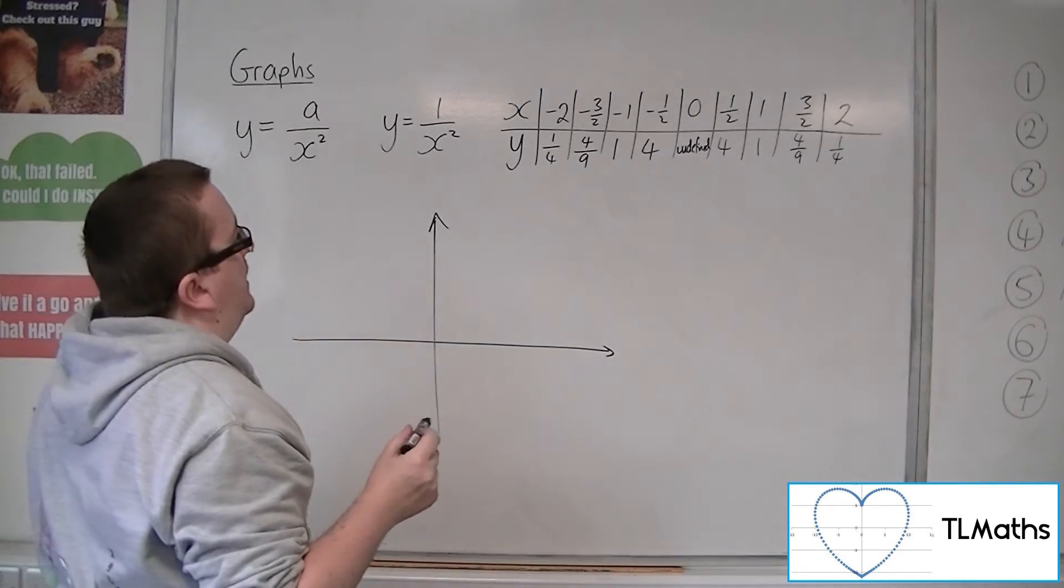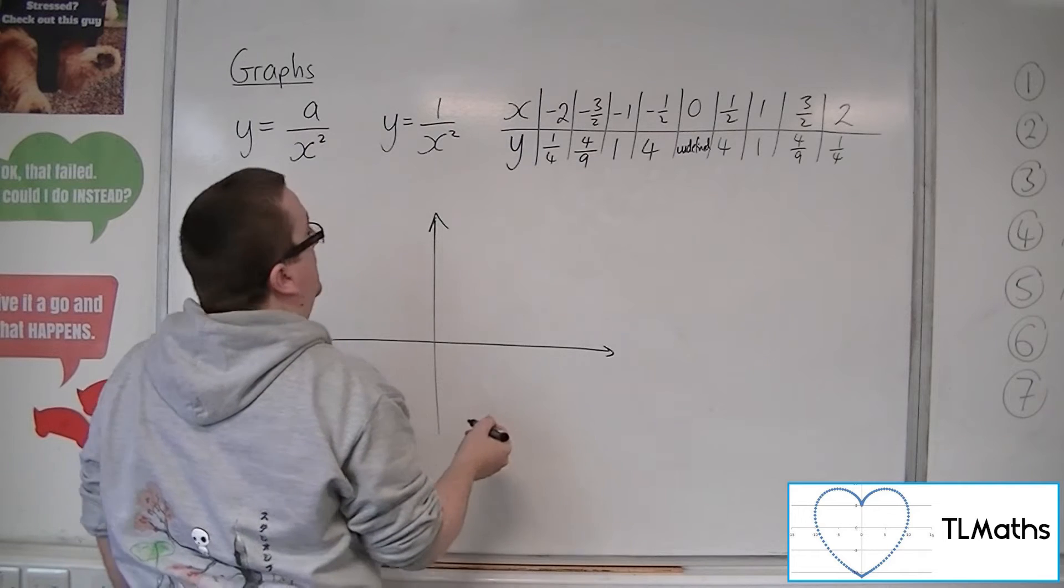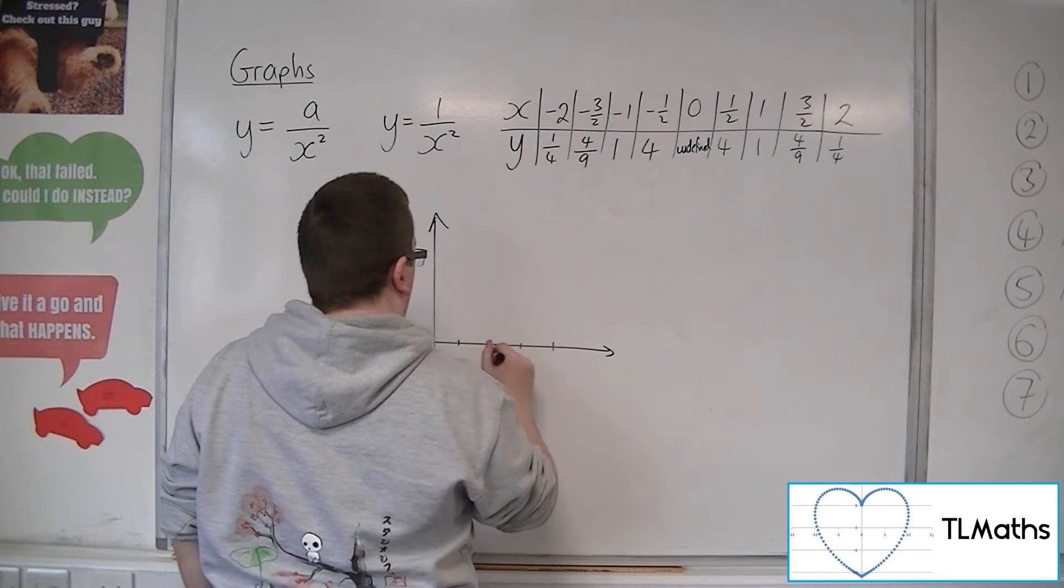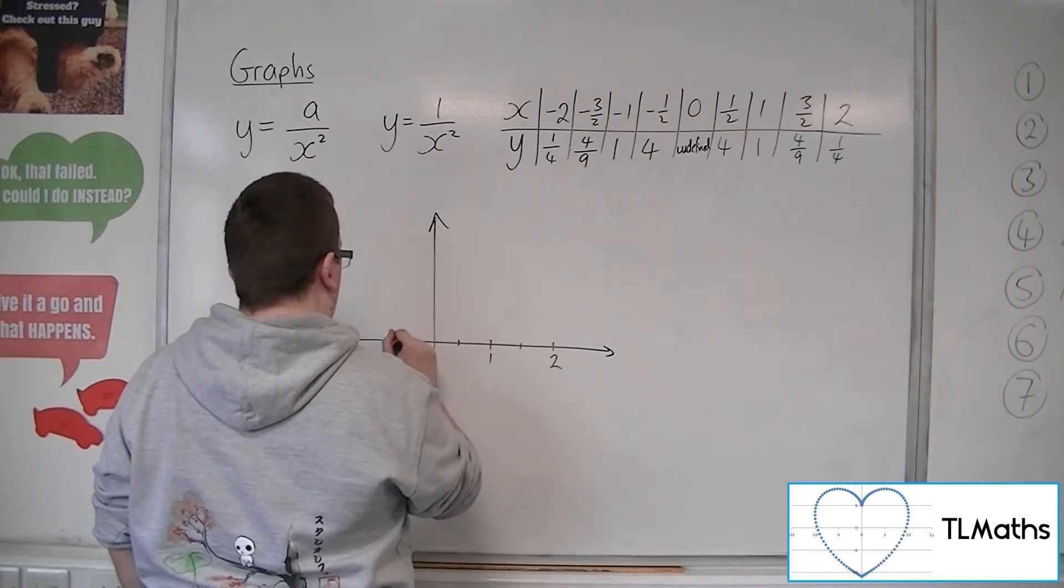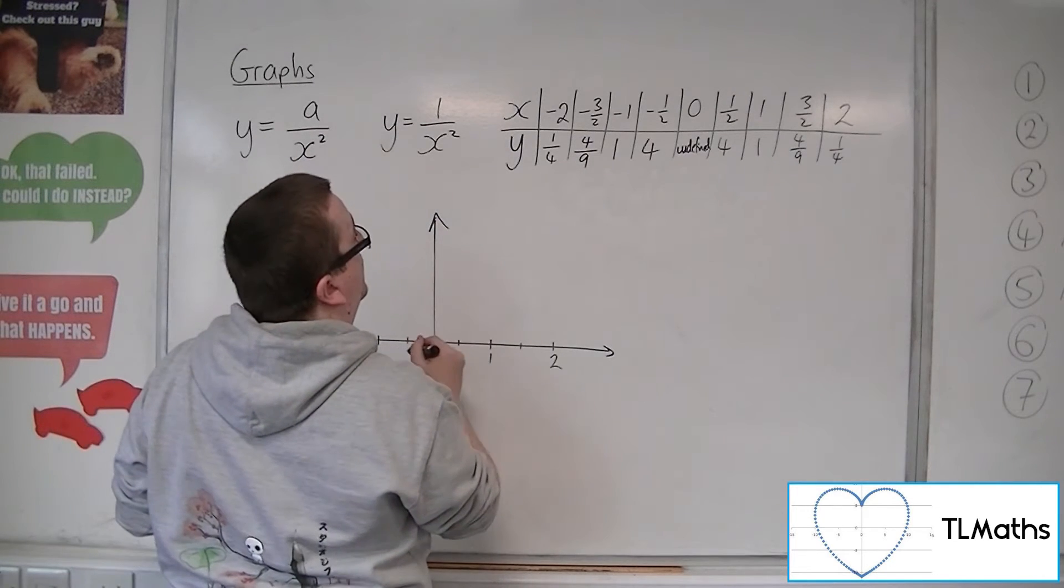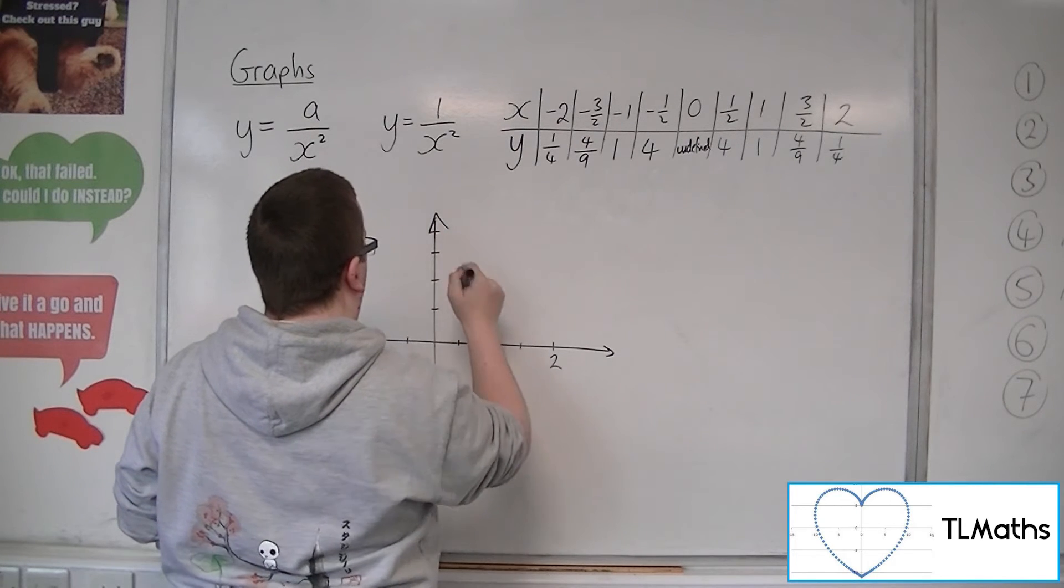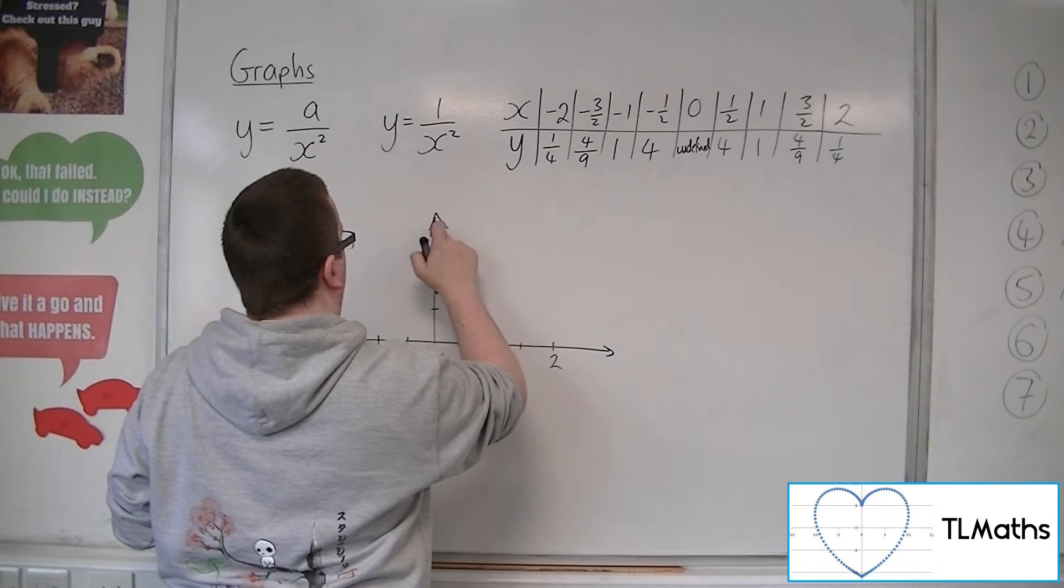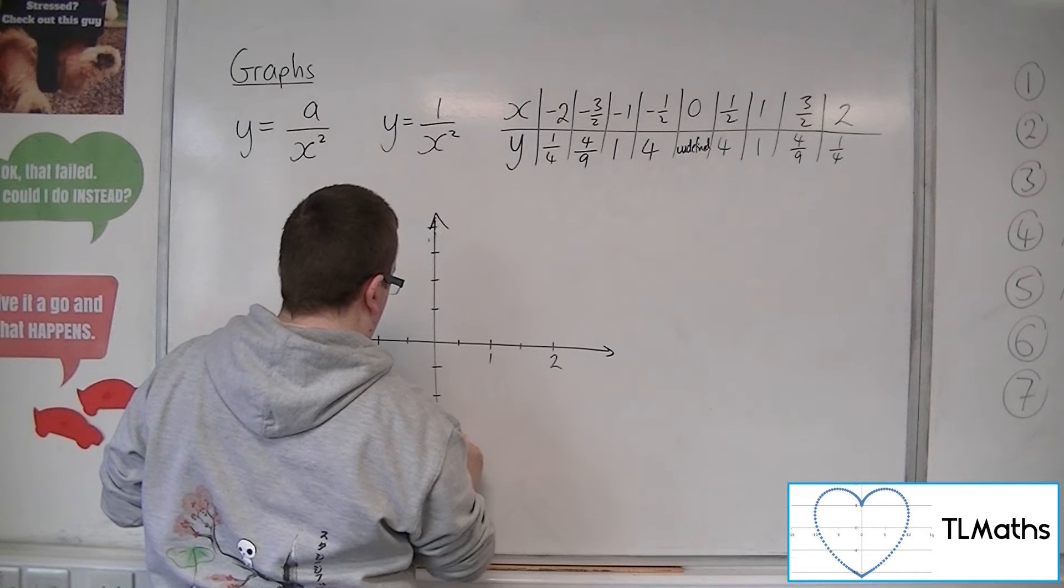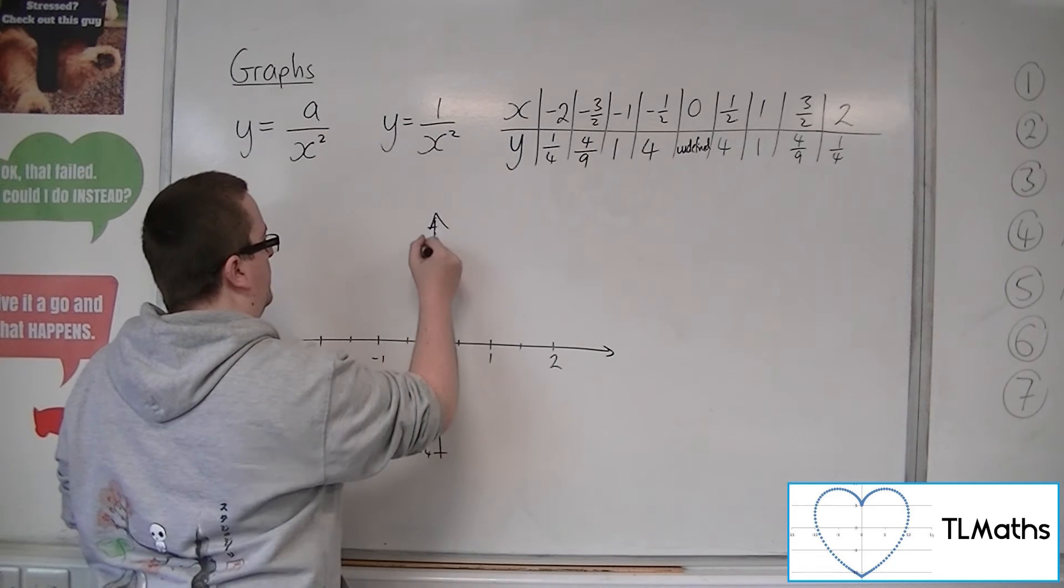To plot this, I'll set up coordinate axes. On the x-axis: 1, 2, -1, -2. On the y-axis, going up to 4: marking 1, 2, 3, 4, and symmetrically below.